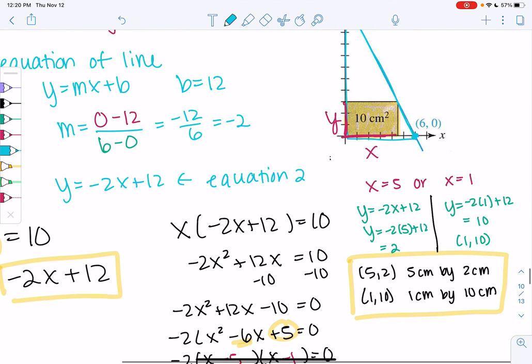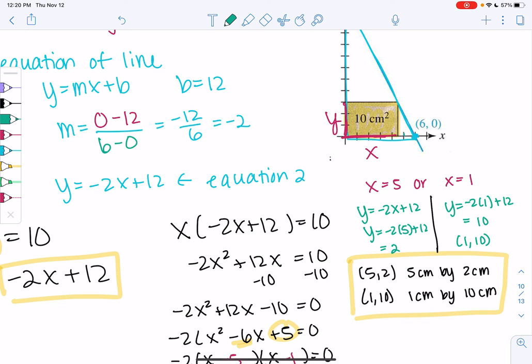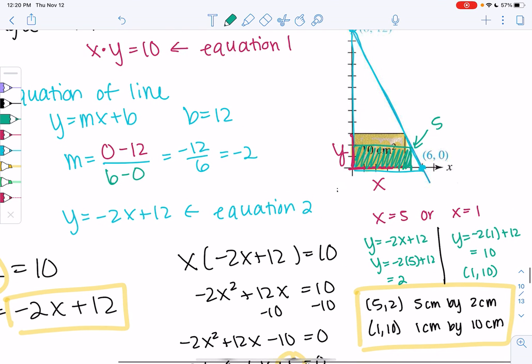So if we do 5 centimeters by 2, so we'll go out to 5 and we'll go up to 2. Yeah, that makes a rectangle. So that makes sense.